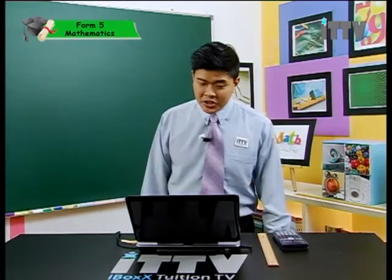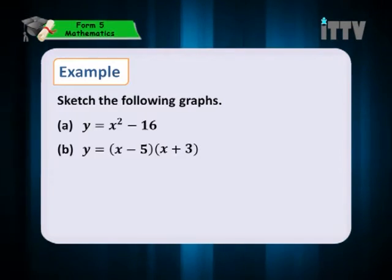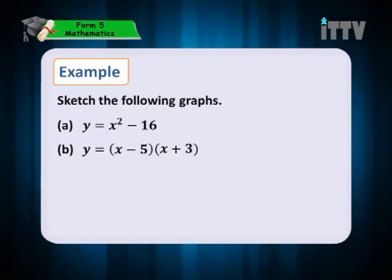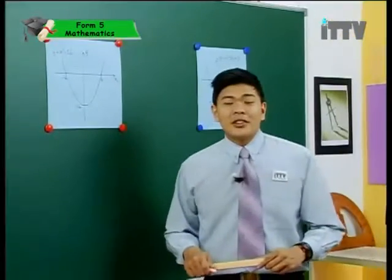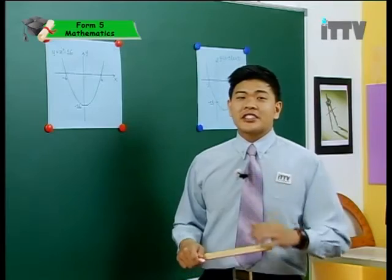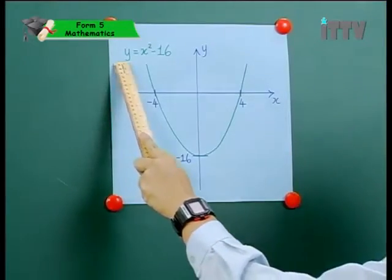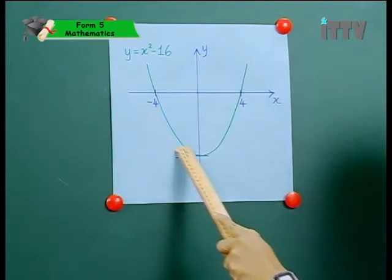Now let's practice sketching graphs of quadratic functions. Sketch the following graphs: A, y equals to x-square minus 16; B, y equals to x minus 5, x plus 3. Let's sketch this together on the board. To sketch the graph of y equals to x-square minus 16 — this is the final sketch, but let me show you how to get it.